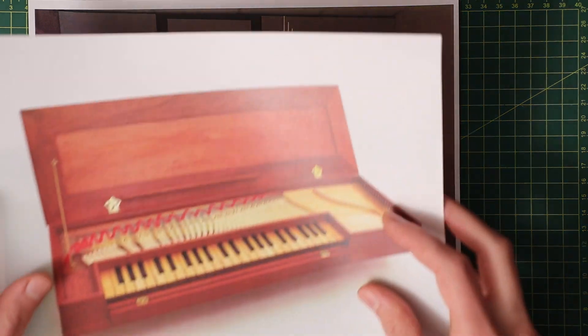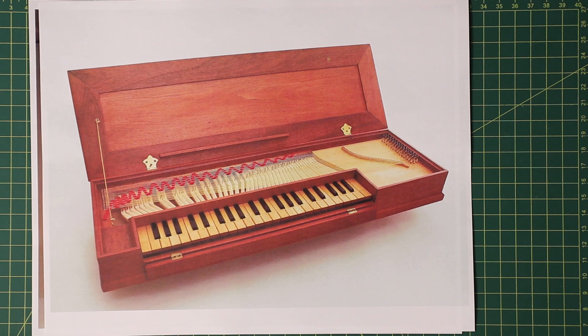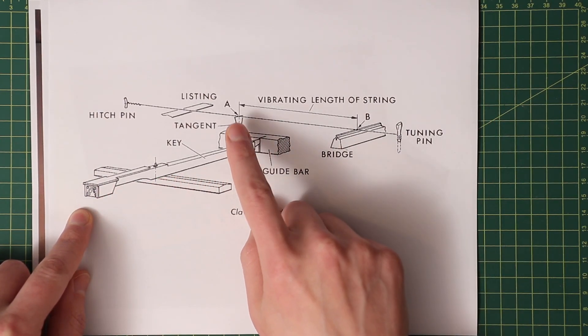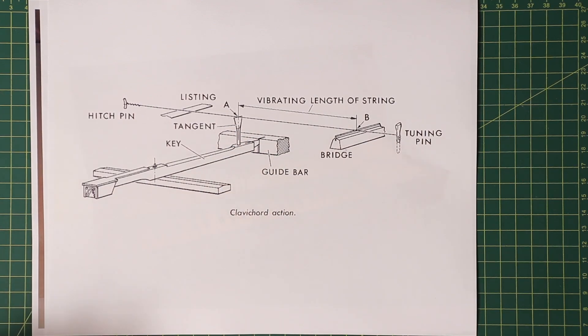The first stringed keyboard instruments would likely be the clavichords. They worked on a pretty simple concept. The key was a single lever with a piece of brass similar to a flathead screwdriver that when the key was pressed would hit the string and remain in contact with it, producing sound in much the same way you can hammer on on a guitar.